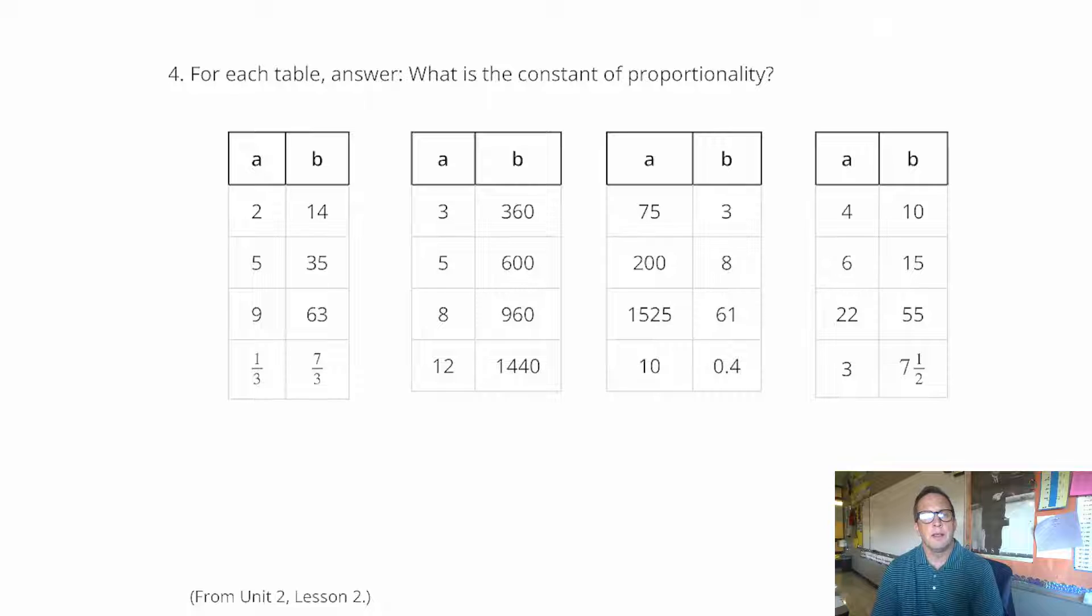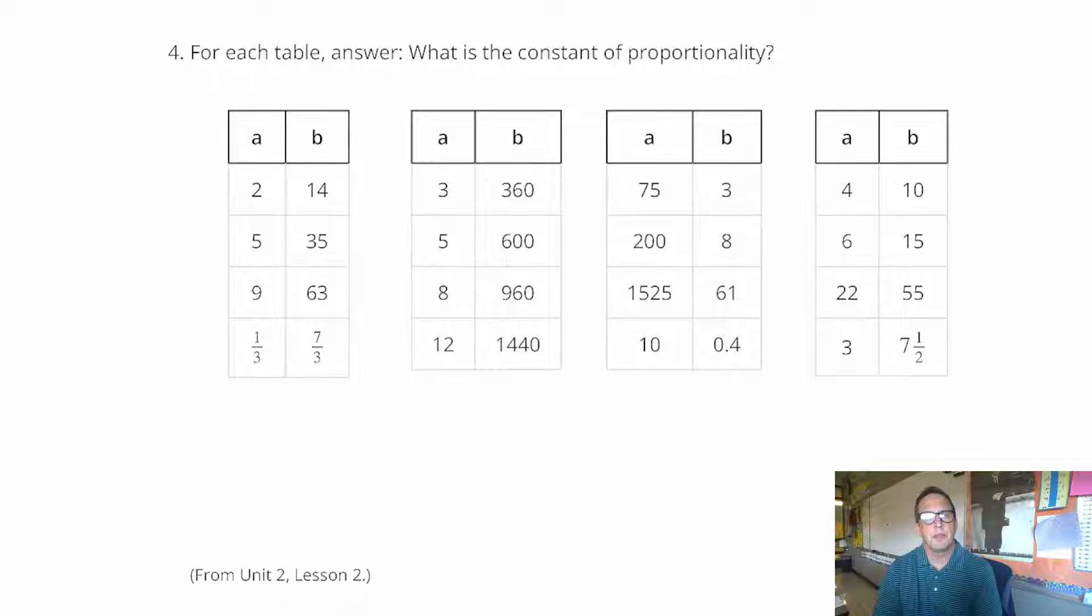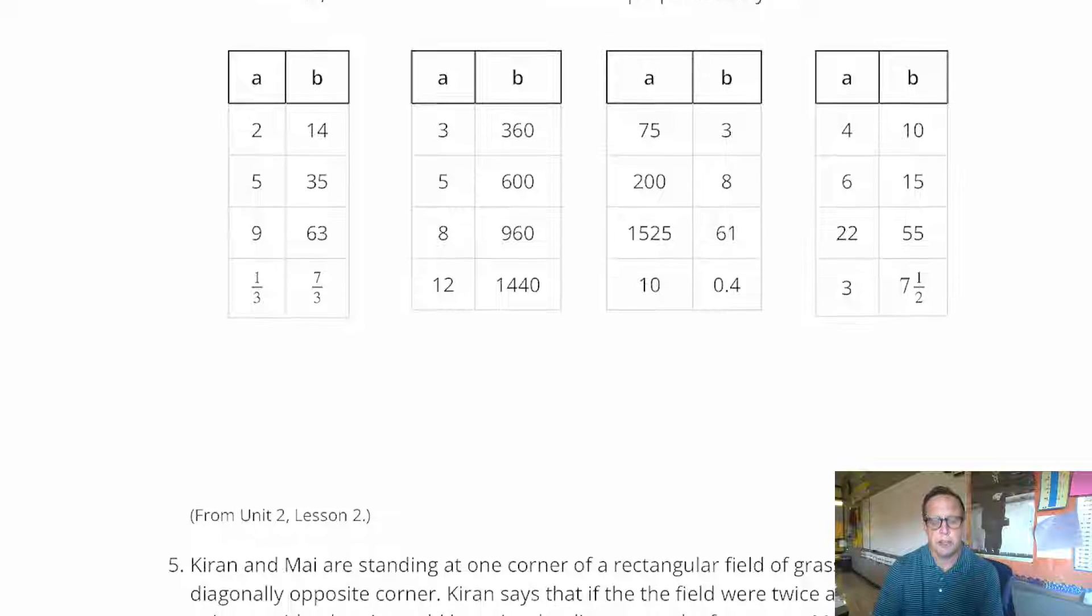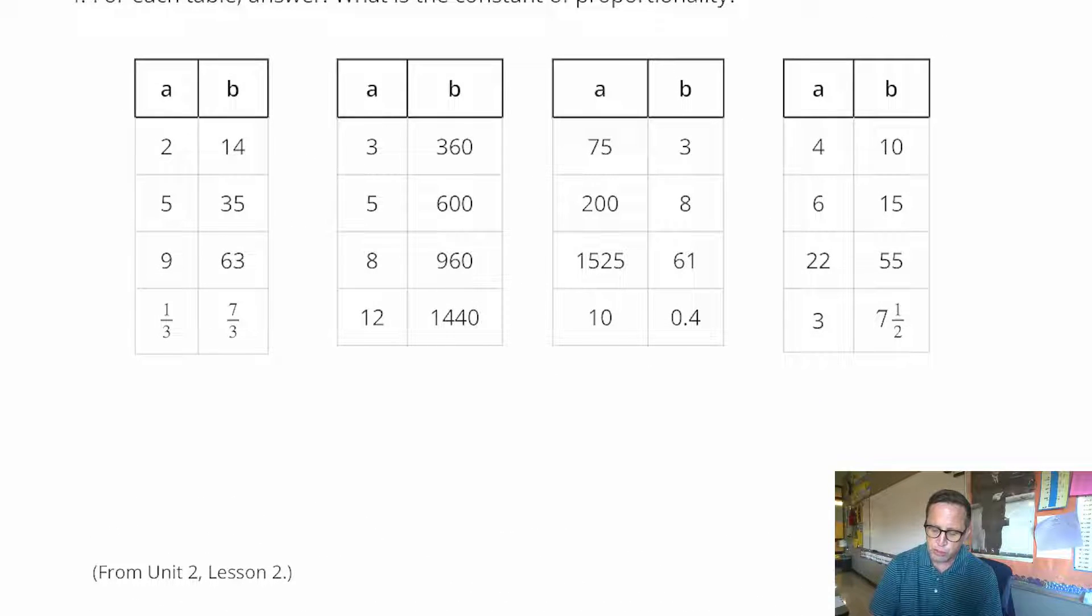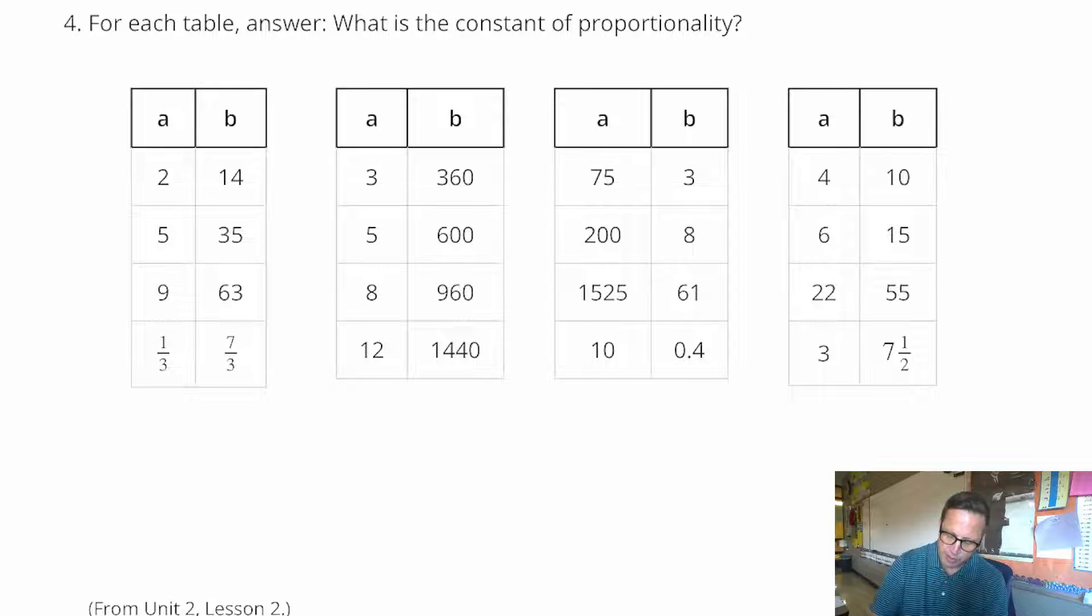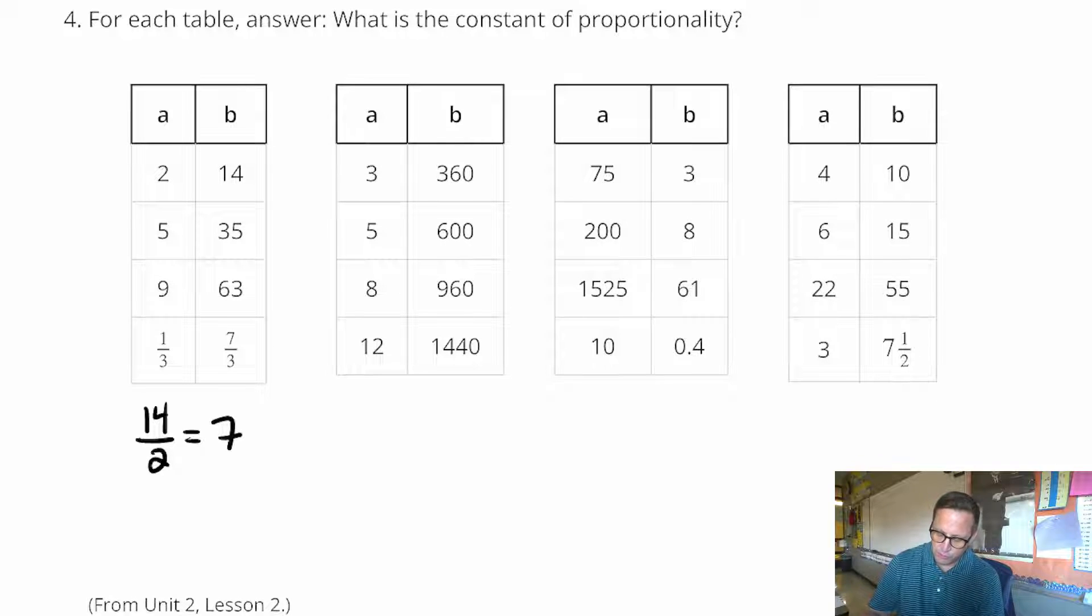For number 4, for each table, answer, what is the constant proportionality? Now, I'm assuming that these are all proportional. So what we got here, this one is, I'll just do 14 divided by 2, which is 7. So our constant proportionality on this one is 7. And that checks off. 35 divided by 5 is 7. 63 divided by 9 is 7. And 7 thirds divided by 1 third is 7.